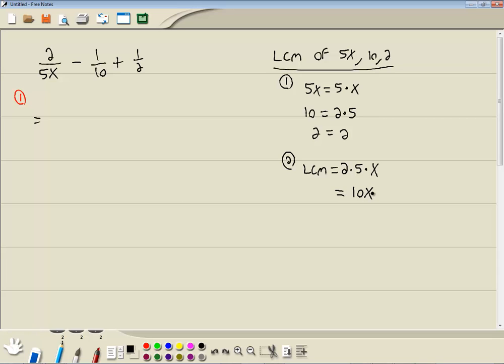2 times 5 is 10, with an x. So that's going to be our LCM, or our least common denominator.